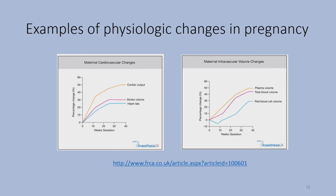Examples of physiologic changes in pregnancy include what is essentially a physiologic stress test over nine months of gestation. Cardiac output increases dramatically — heart rate times stroke volume — even very early in the first trimester. In terms of maternal intravascular volume, there is an increase in total blood volume and plasma blood volume as well.